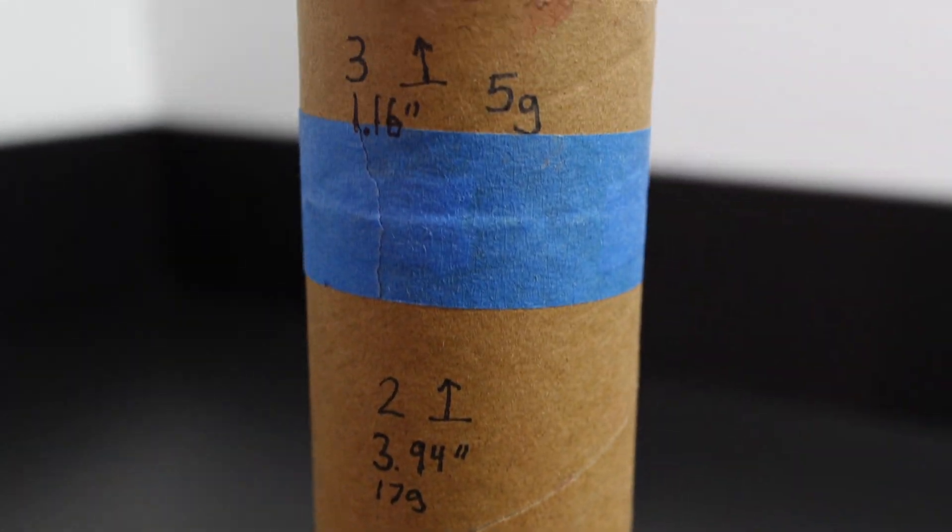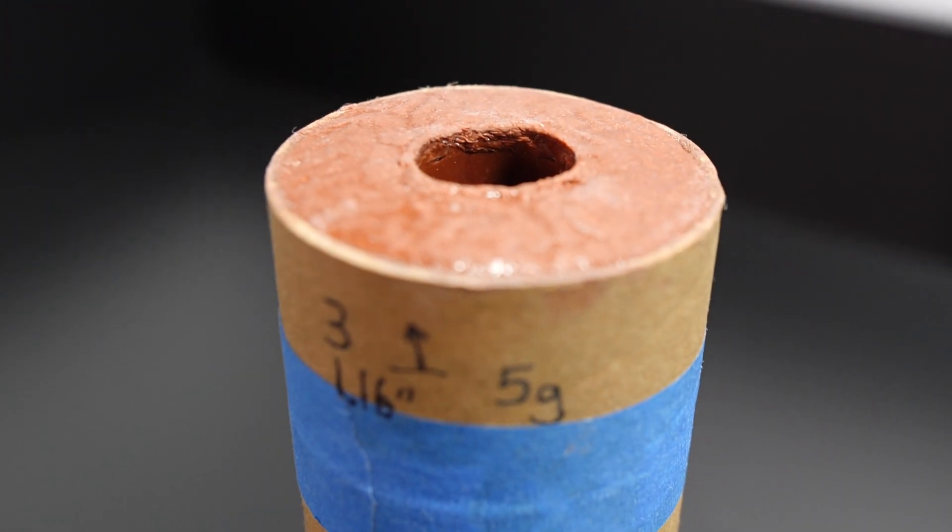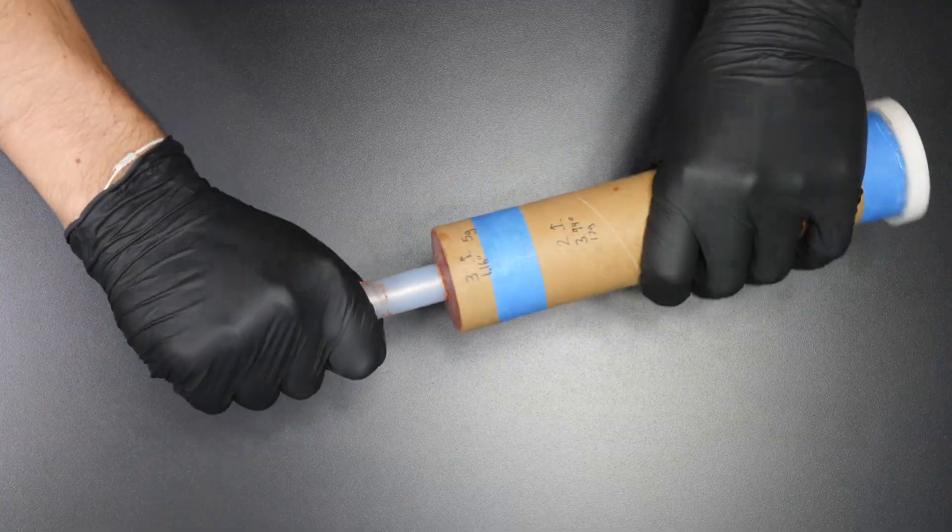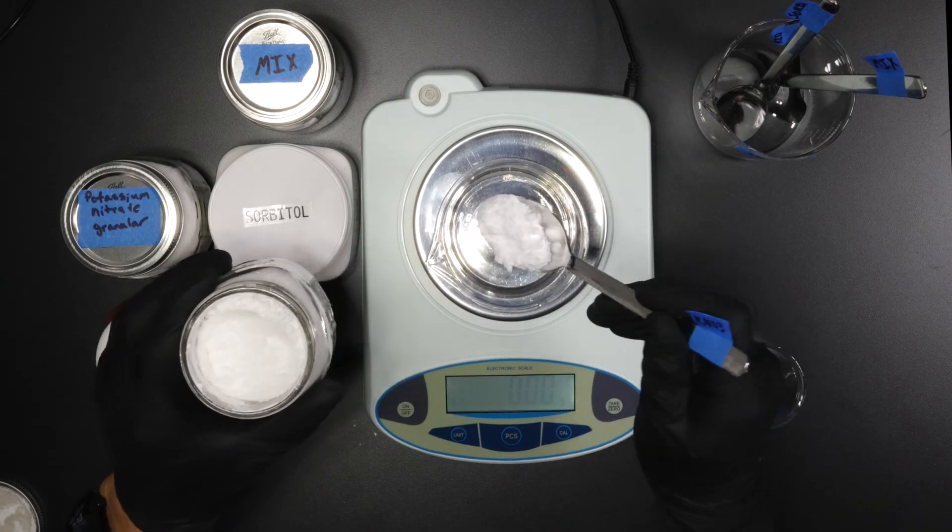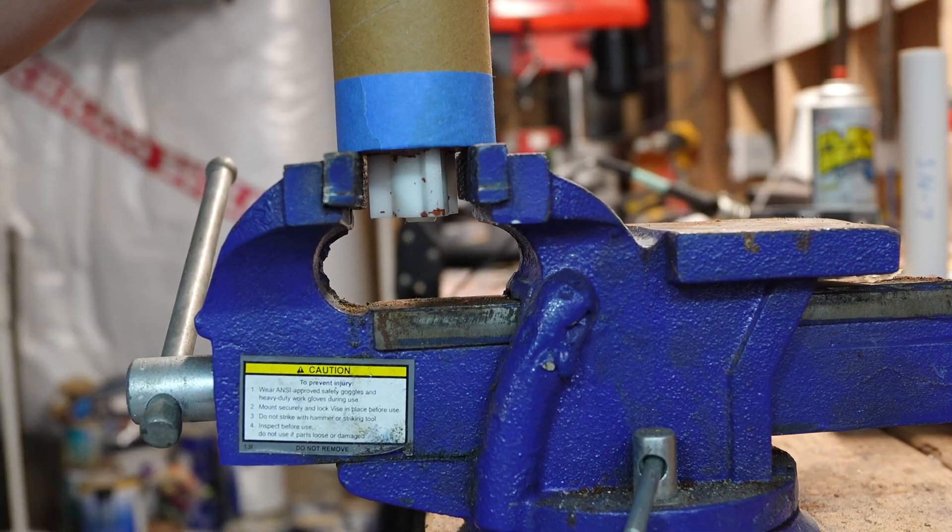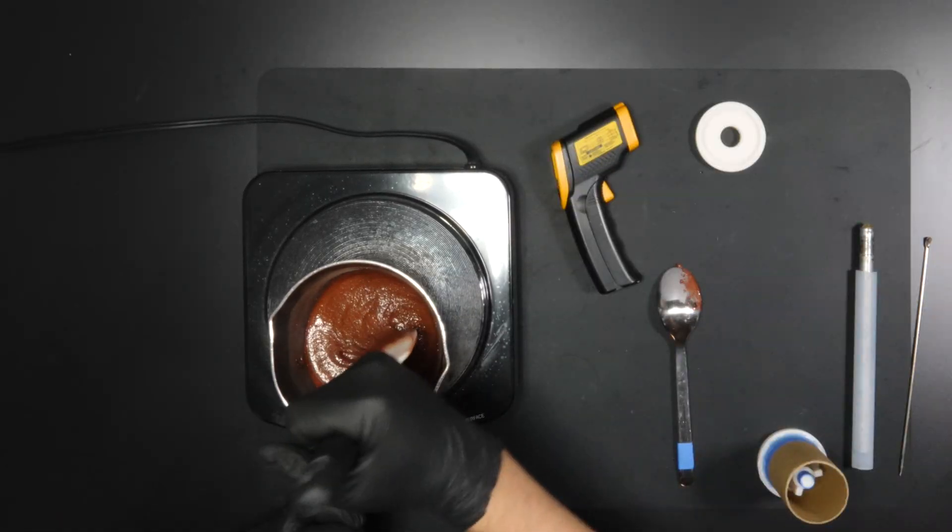Welcome. In today's video, I'll be taking you through casting a propellant grain for my upcoming motor, SN5. I've picked up a lot of techniques over time, and surprisingly, casting the propellant has been one of the toughest parts of building my high-powered rocketry motor. I hope to share some of what I've learned so you don't make the same mistakes I have.